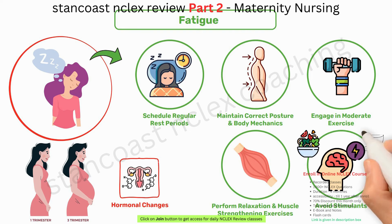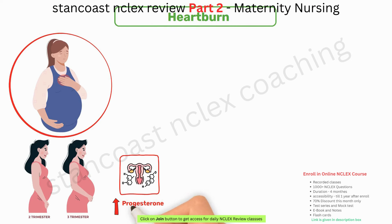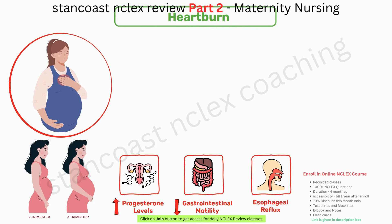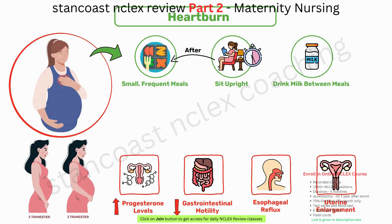Heartburn typically occurs in the second and third trimesters due to increased progesterone levels, decreased gastrointestinal motility, esophageal reflux, and uterine enlargement. To alleviate heartburn, individuals should opt for small, frequent meals; sit upright for 30 minutes after eating; drink milk between meals; avoid fatty and spicy foods; and consult with their HCP about suitable antacids.